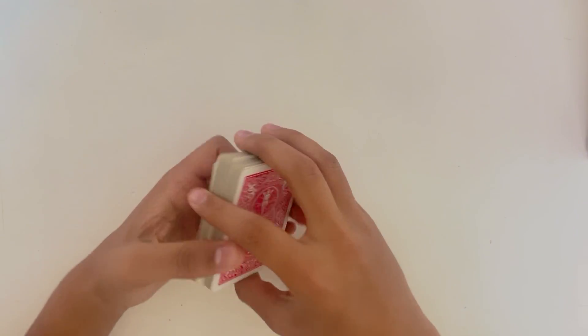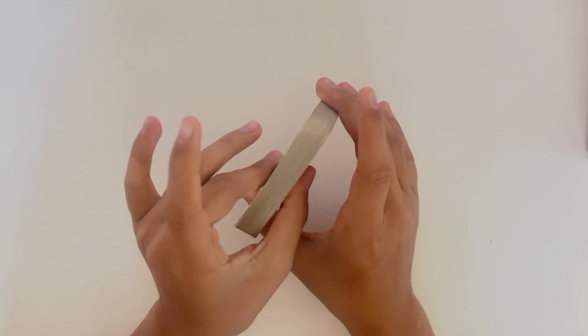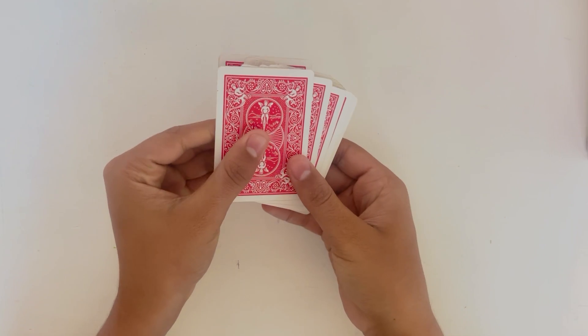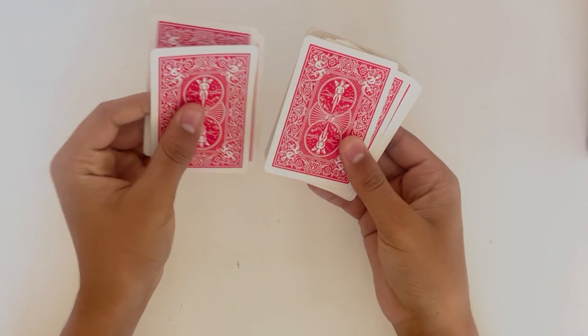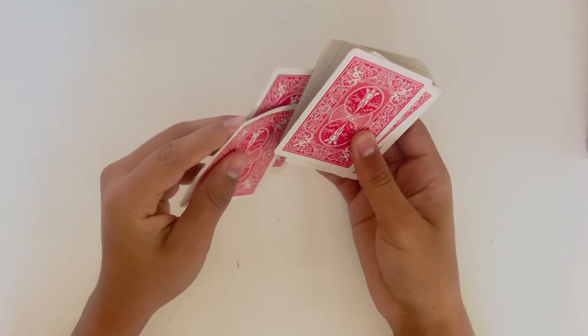Once you do that you hold it like this and then when you flick it, the rest of the deck will just go to the right hand and then two cards will stay in your left hand.